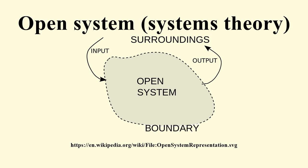Today the concept has its applications in the natural and social sciences. In the natural sciences, an open system is one whose border is permeable to both energy and mass. In physics, a closed system, by contrast, is permeable to energy but not to matter.